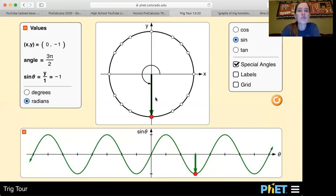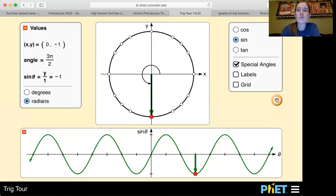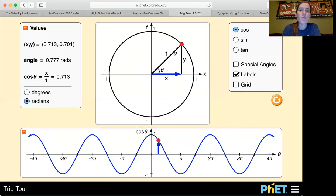The next thing to review is the graphs of these functions. I'm going to reset this and still change it to radians, although it doesn't matter radians or degrees. I'm going to turn labels on so that we can see the x-axis, theta axis labeled. And let's start with cosine. And as we open up this angle, I've turned off the special angle so this can be continuous.